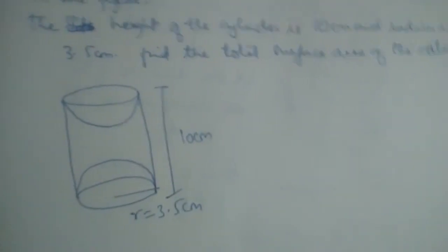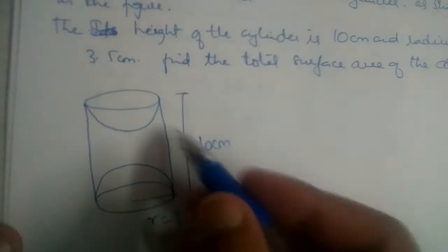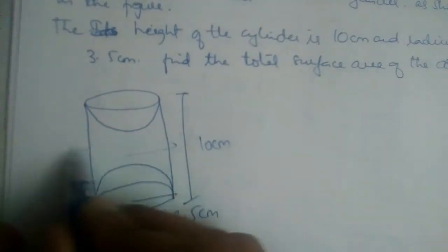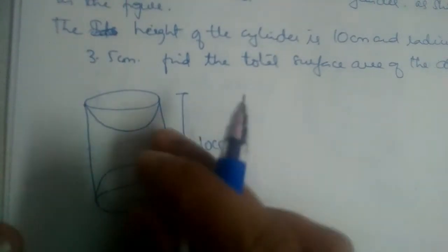One mistake students will make in this problem is they will subtract. See, we need to find the surface area of this solid.